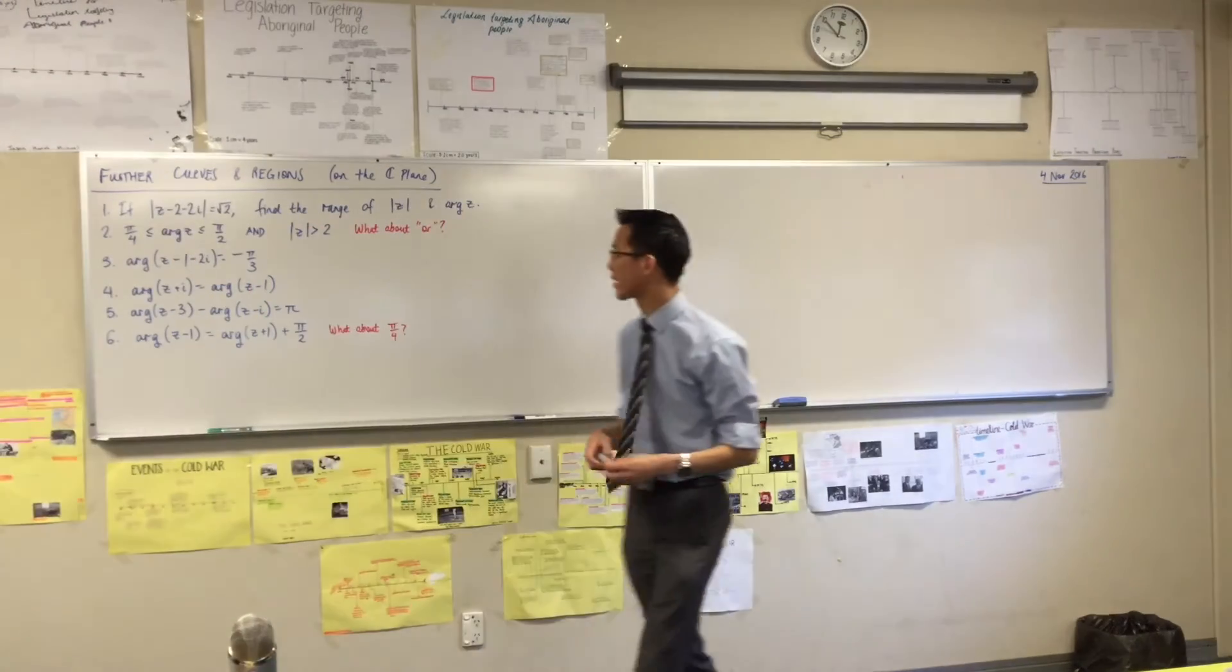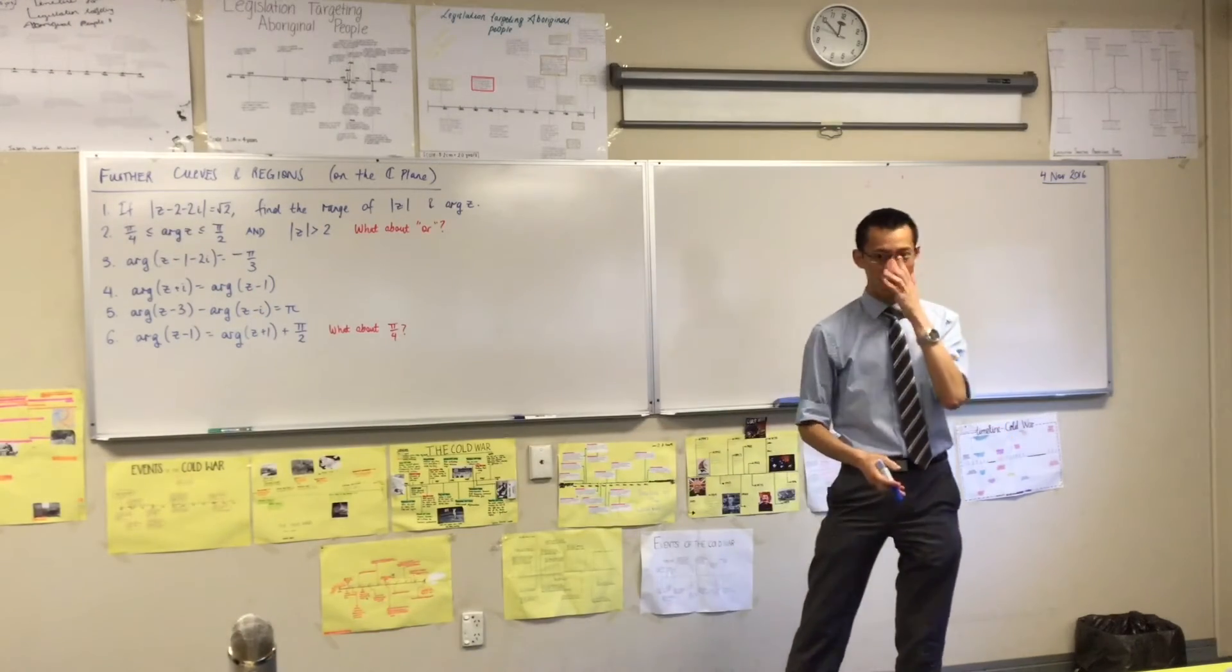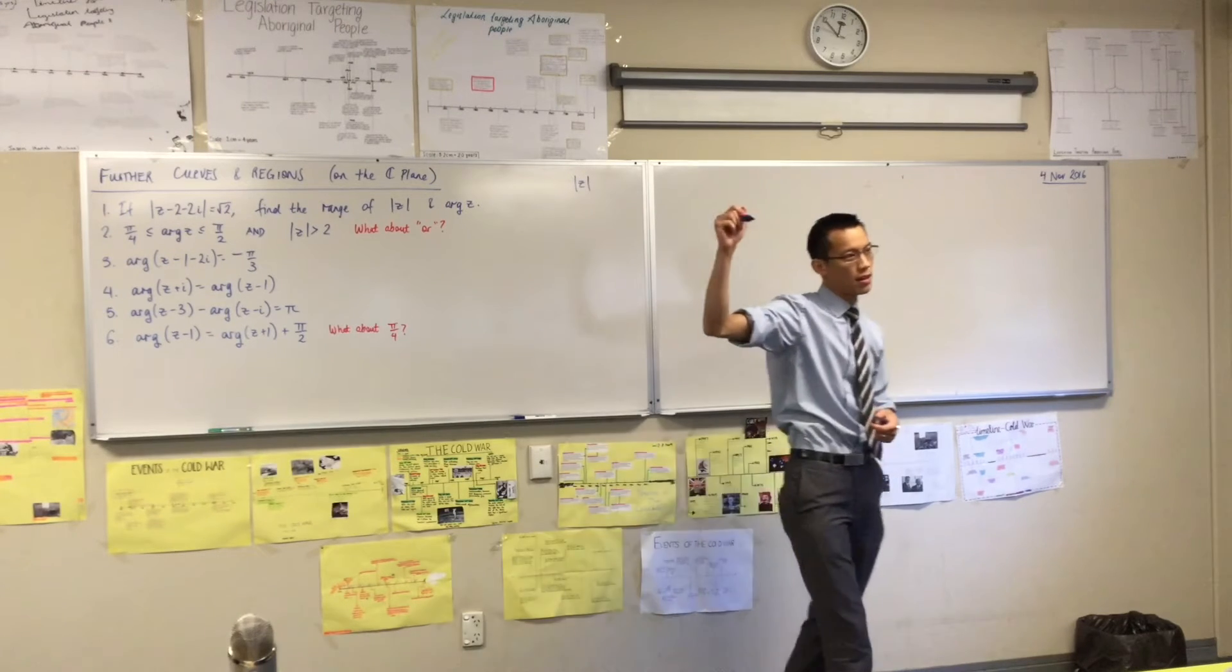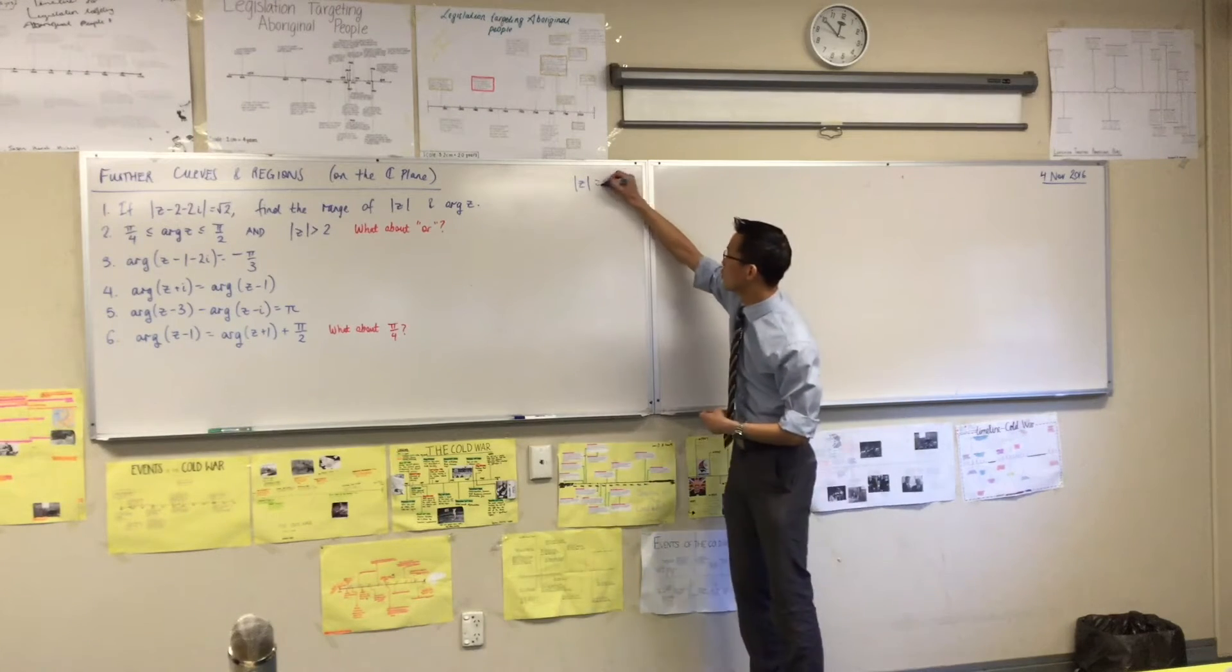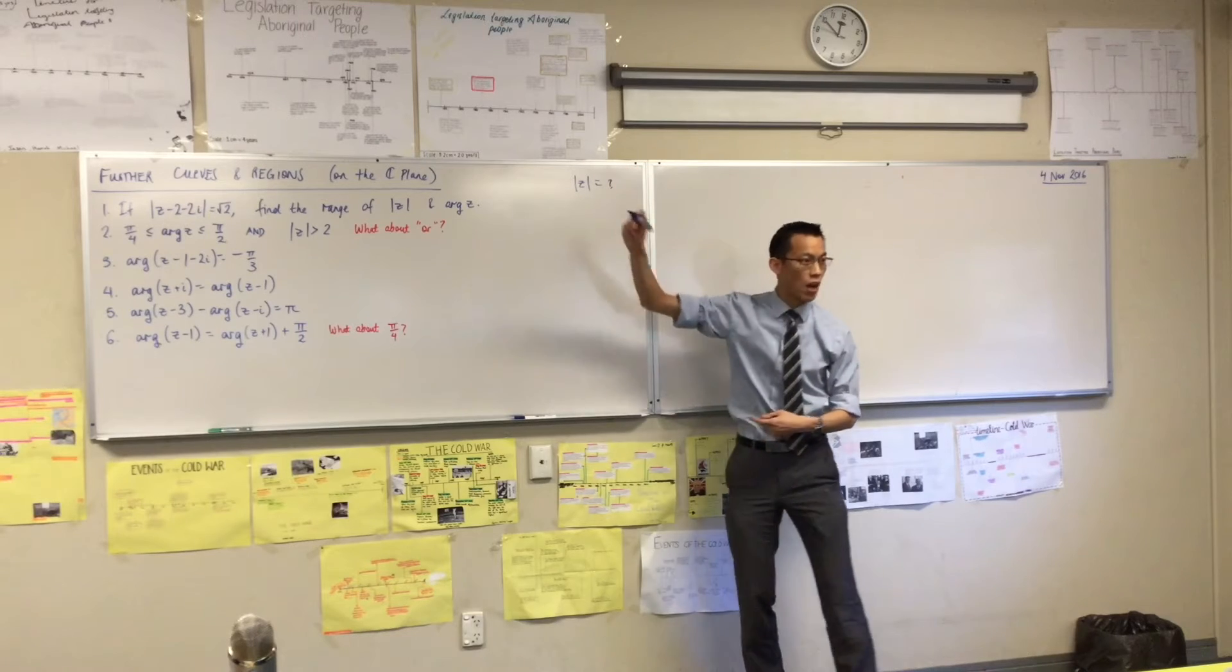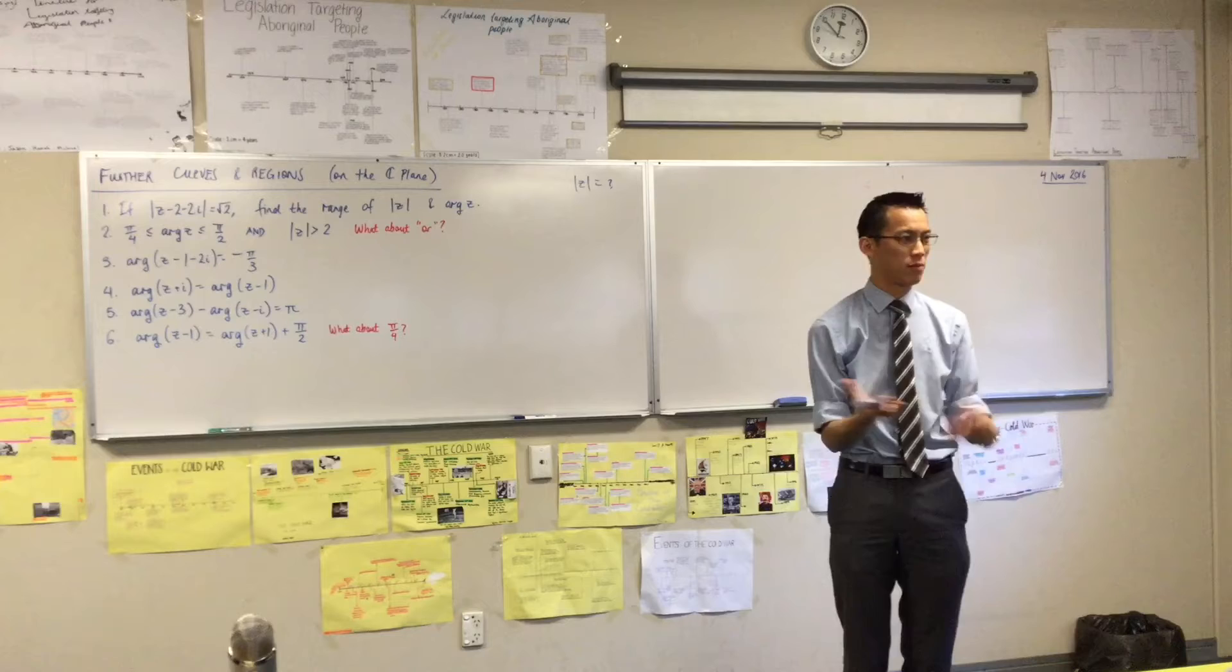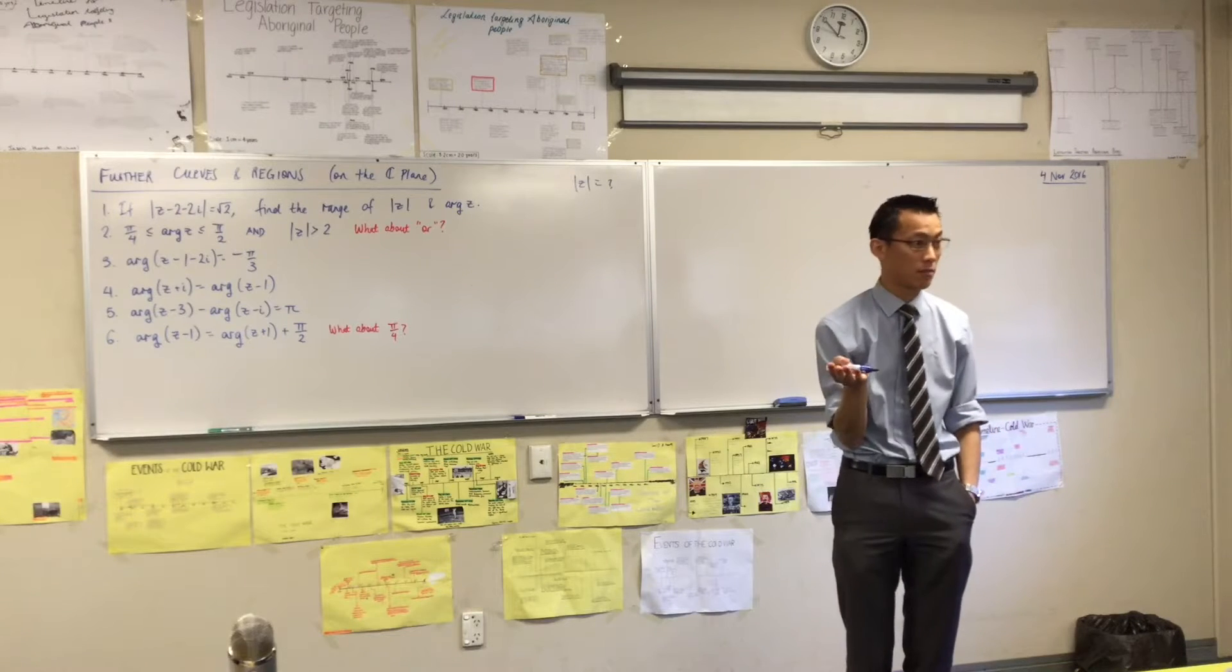So I want you to think back to Tuesday. In particular, I want you to remember we defined this in a geometric way. And if you see this is equal to some number over here, like say 5, how do you read that? How do you geometrically explain what's going on? What shape do you get?